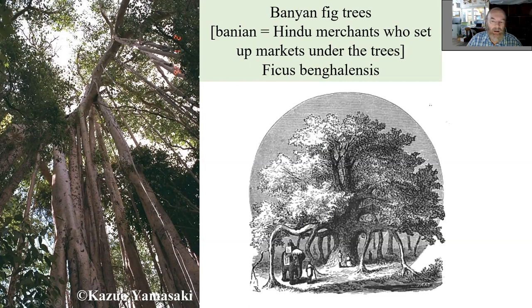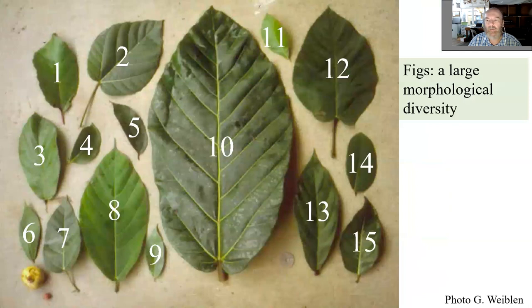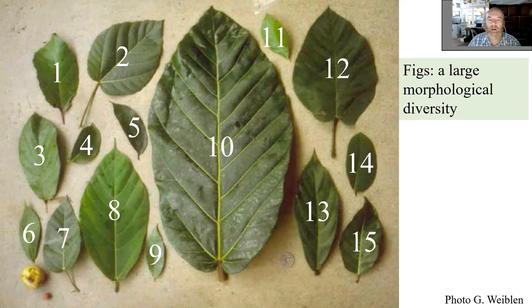Another distinct form is the banyan fig — from the Hindu word for market, where people liked to set up markets under huge banyan trees. They have horizontal branches with secondary roots, so one tree can create a large forest of secondary stems and roots. Ficus bengalensis is an example. There is also remarkable diversity of leaves — people typically know the potted plant ficus elastica with its tough glossy leaves rich in latex, but there are also figs with hairy, very soft leaves with almost no latex.